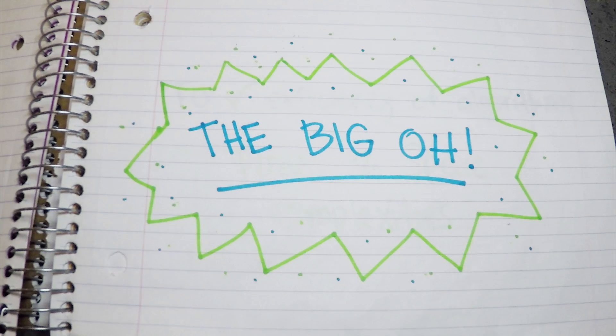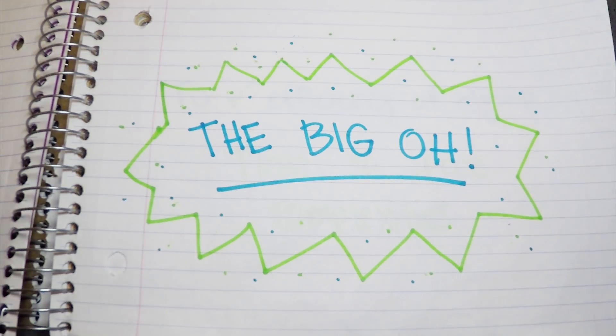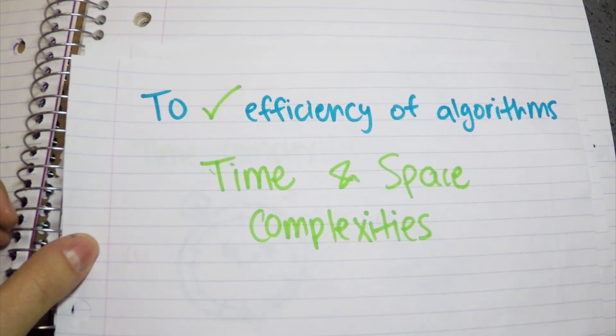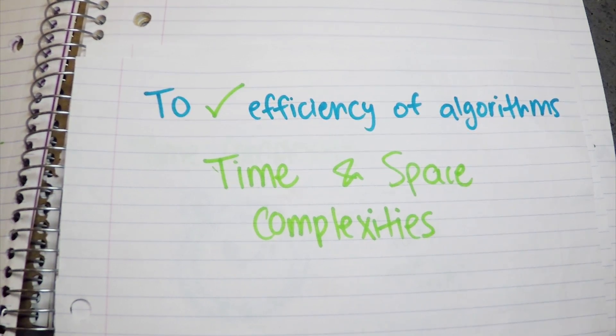Hey guys, let's talk about the big O. In computer science, we use big O to determine the efficiency of algorithms.